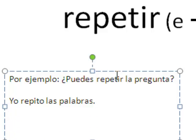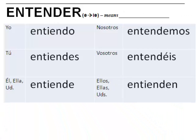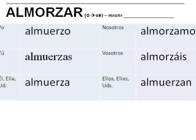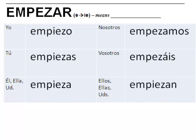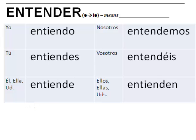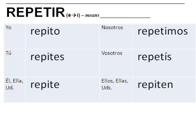Let's review these four verbs one more time. Almorzar — to eat lunch. How do you say they eat lunch? Ellos almuerzan. Empezar — to start. How do you say 'Class starts at 8'? La clase empieza a las 8. Entender — to understand. How do you say 'we understand'? Entendemos — no stem change. And last, repetir — to repeat. How do you say 'we repeat the words'? Repetimos las palabras.